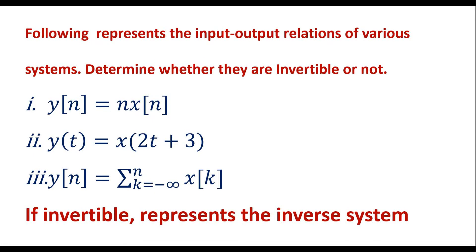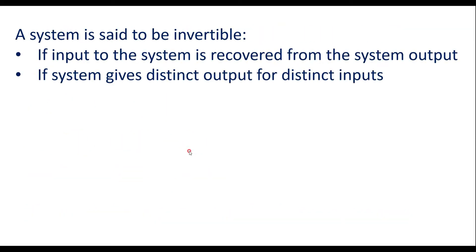Before proceeding with the examples, let me explain what is meant by an invertible system. A system is said to be invertible if the input to the system can be recovered from the system output. Or if the system gives distinct output for distinct inputs, then we can say that such systems are known as invertible systems.